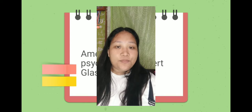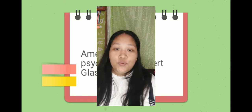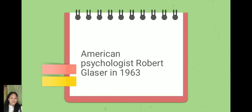I will give you an example of norm referenced and criterion referenced interpretation. When assessing driving skills, the student driver's performance is checked against a set of criteria. Rendering the judgment of whether he fails or passes is criterion referenced.